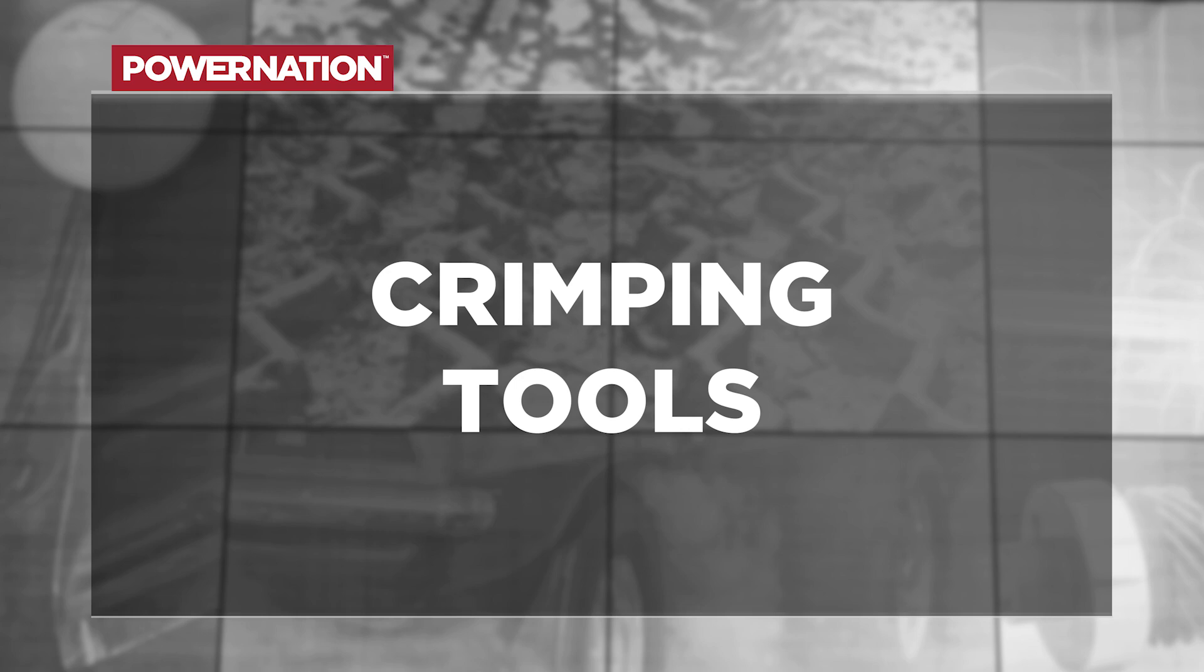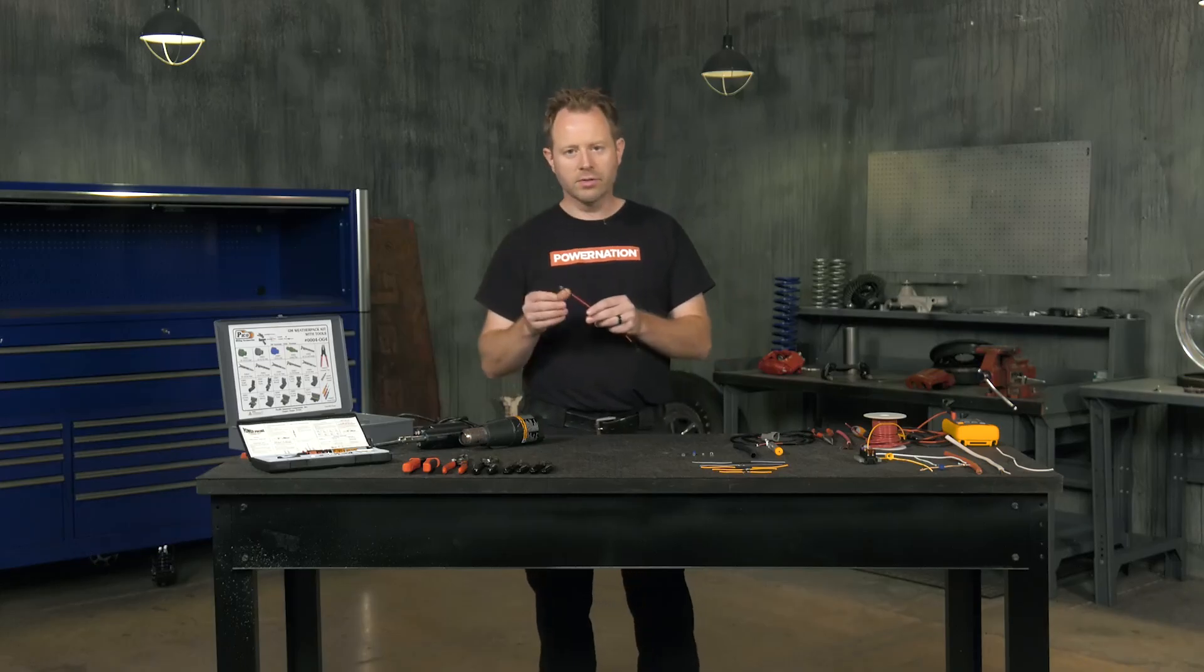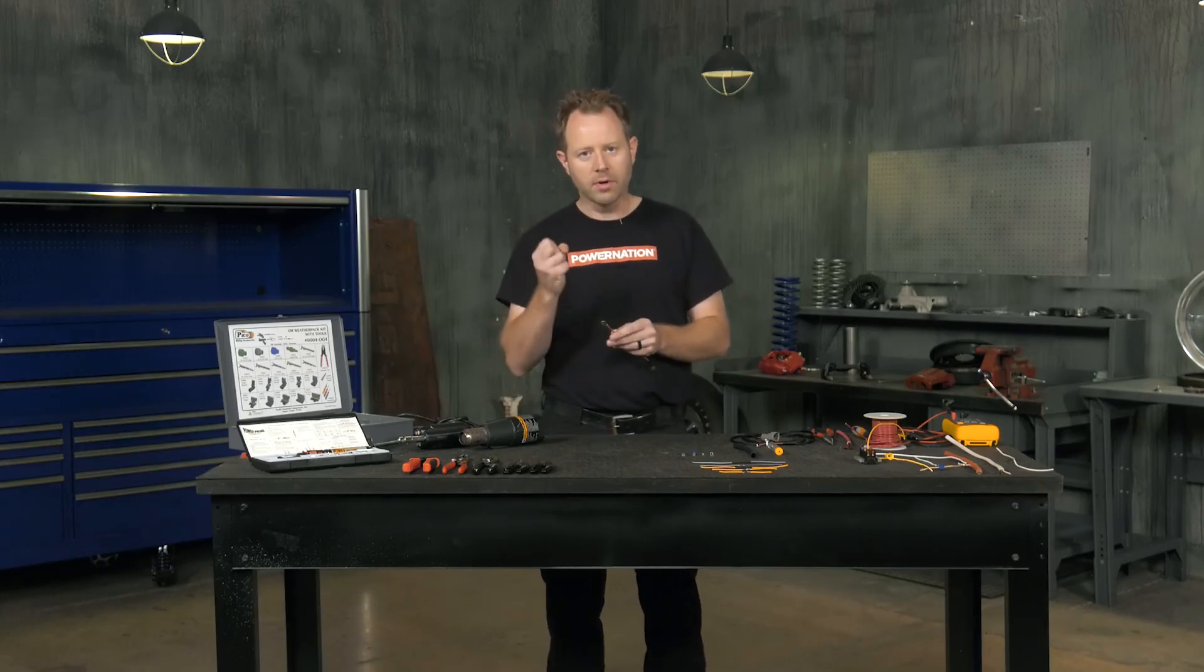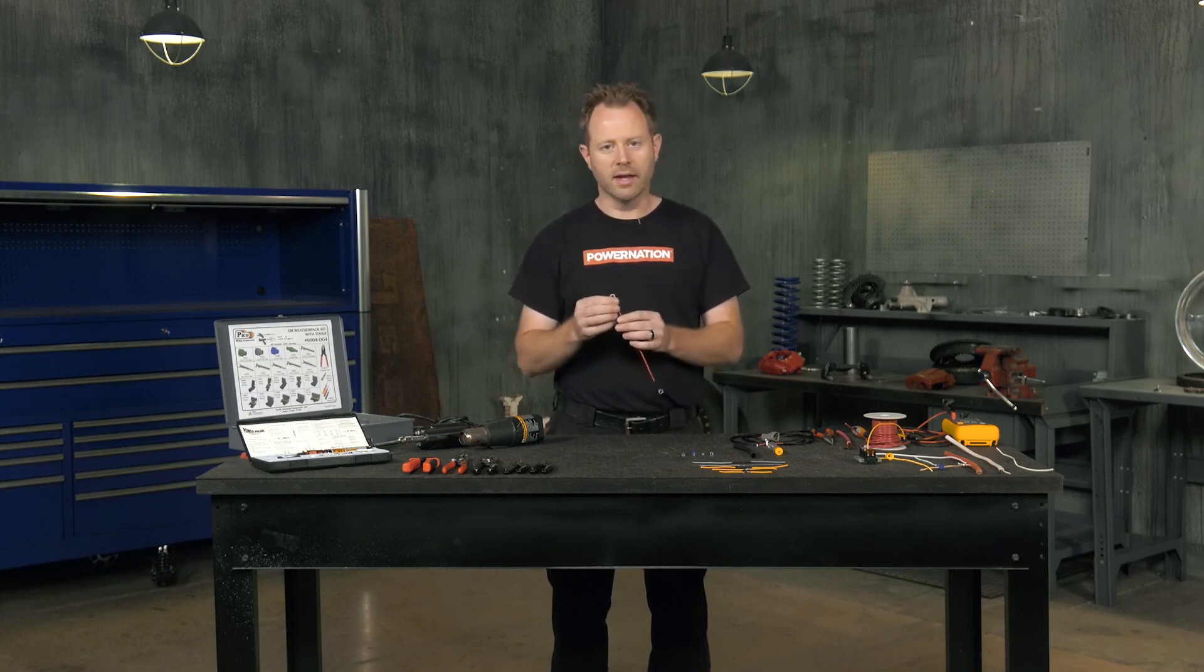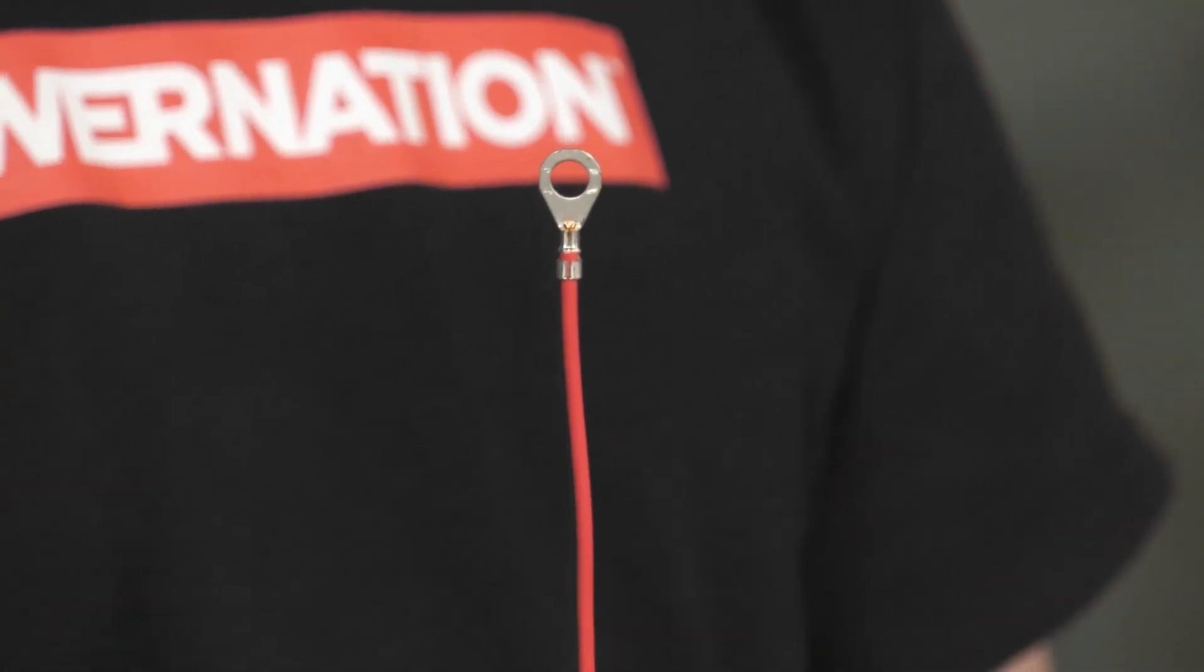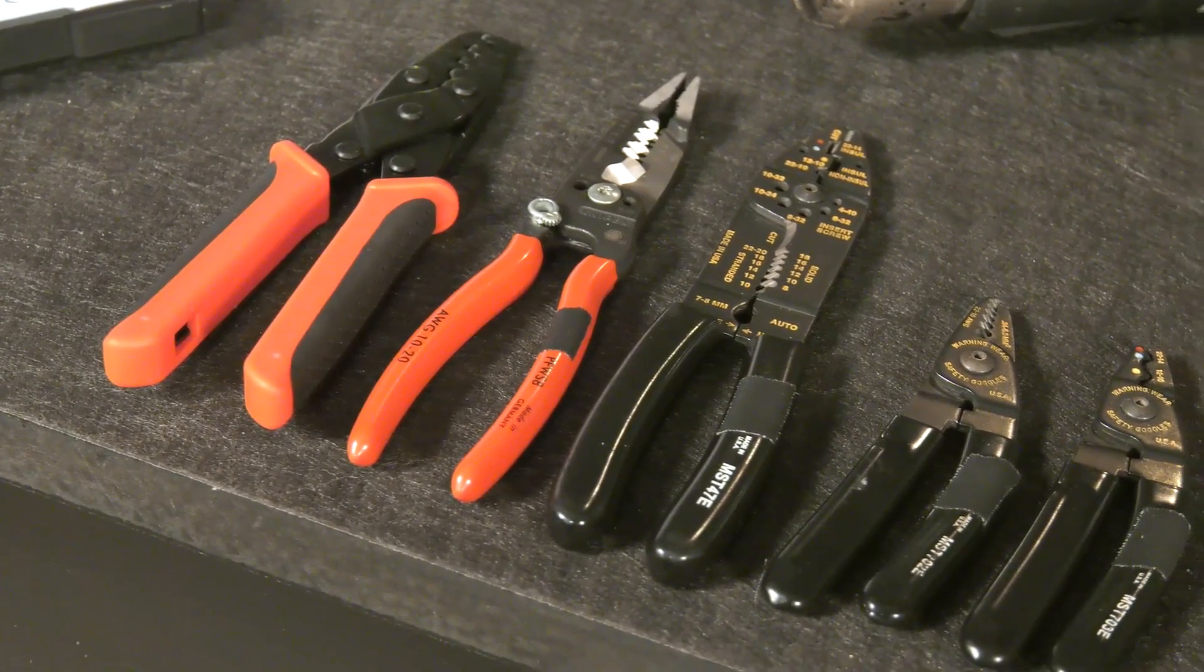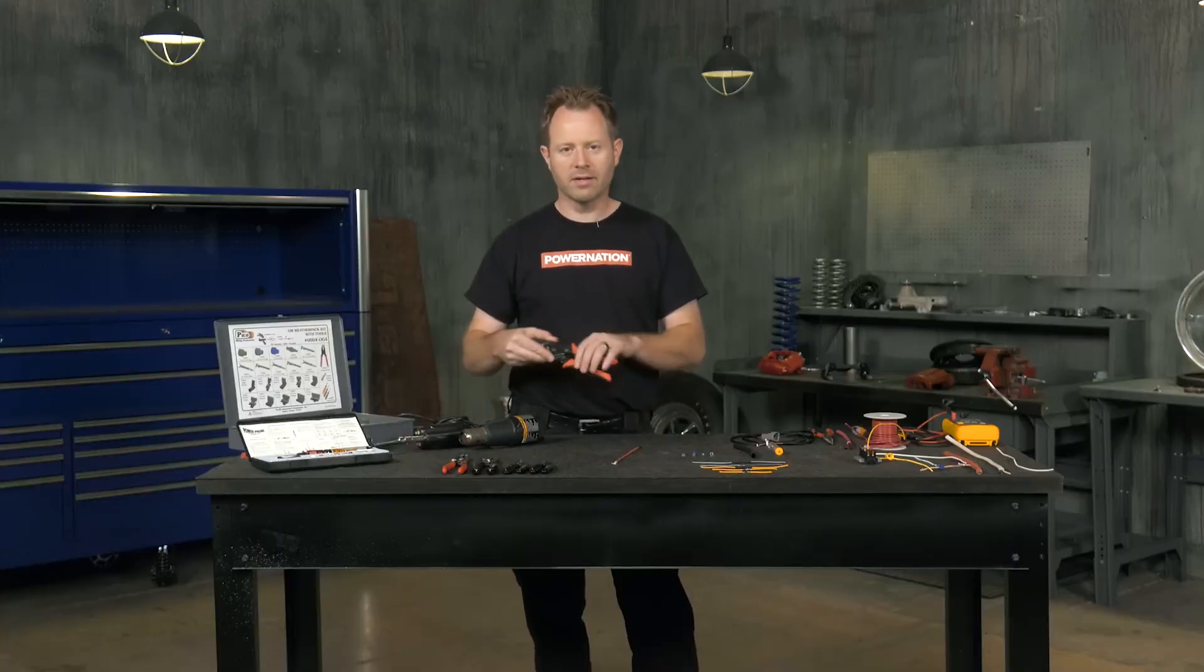So next thing is crimping tools. Now if you want a quality crimped connection like this one here, it takes special crimping tools to get the right crimp on that connector and that wire. Now anybody can take a connector and throw it in a vise and crank it down and smash it, but that doesn't provide the best connection there.